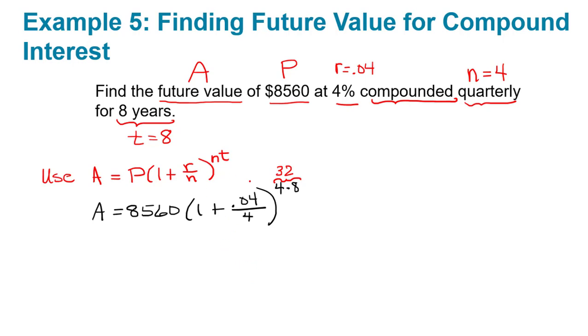Another thing that I notice is inside the parentheses we have addition and division here. Remember division comes before addition. But instead of having to communicate that to your calculator, notice that 4 goes evenly into 0.04, so you can divide that without rounding off. That's exactly equal to 0.01. So we can change this problem to say A equals 8,560 times 1.01 raised to the 32nd power.